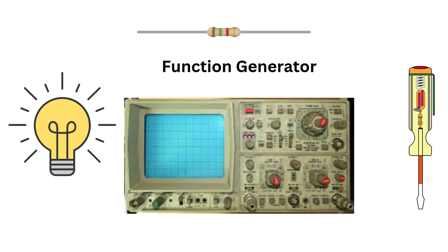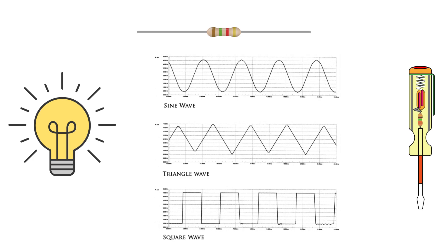The function generator is like a signal creator. It produces various waveforms - sine, square, triangle - that you can use for testing and simulating signals in your circuits. It's perfect for experimentation.